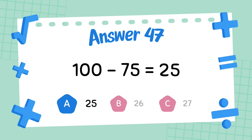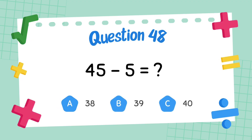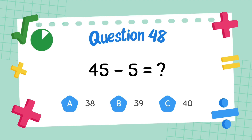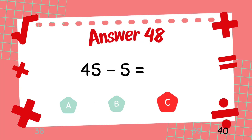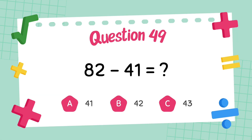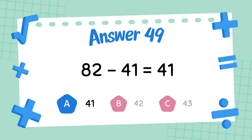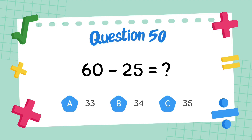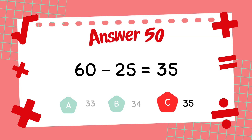The answer is 25. What is 45 minus 5? The answer is 40. What is 82 minus 41? The answer is 41. What is 60 minus 25? The answer is 35.